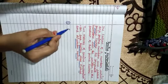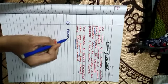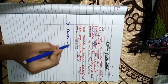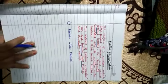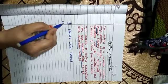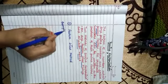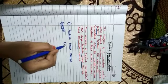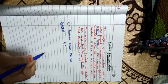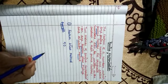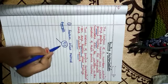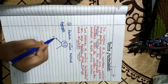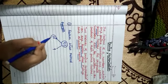First, see factor tree method. For example, 90 ki prime factorization karna hai. How we will calculate? This is 90. Two factors: 10, 9. 10, 9 is 90.